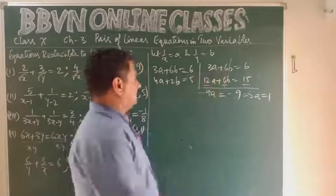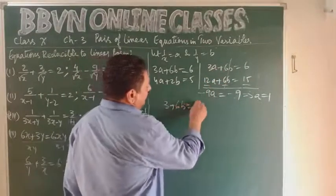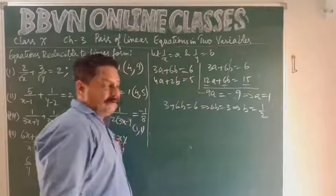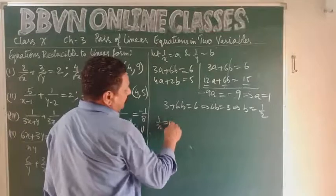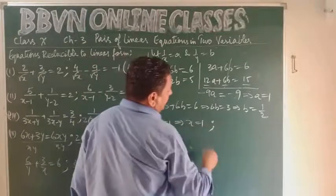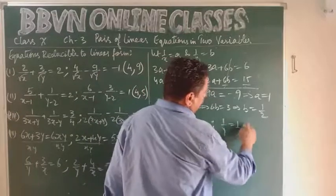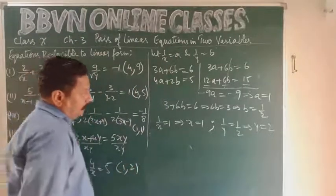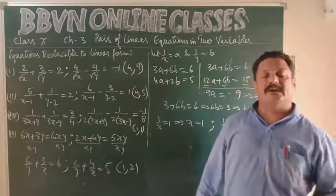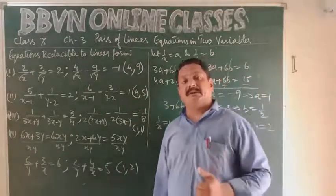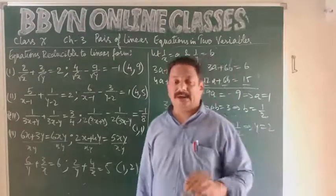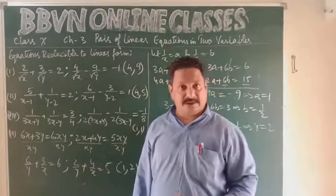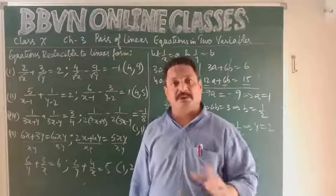Substituting a = 1 into the first equation: 3(1) + 6b = 6, so 6b = 3 and b = 1/2. Back-substituting: a = 1/x = 1, so x = 1. And b = 1/y = 1/2, so y = 2. The solution is x = 1 and y = 2. These were certain equations reducible to a pair of linear equations. Children, try to practice the questions, come up with doubts, and start revising chapters for your test scheduled next month.